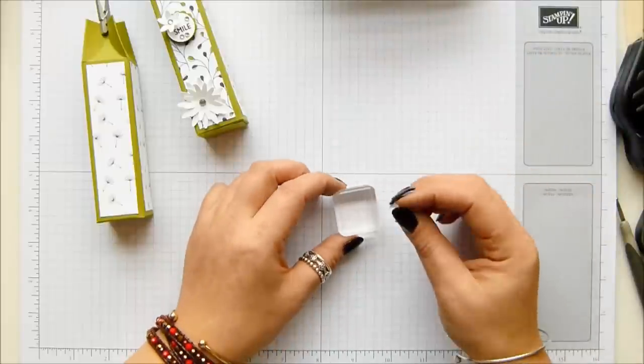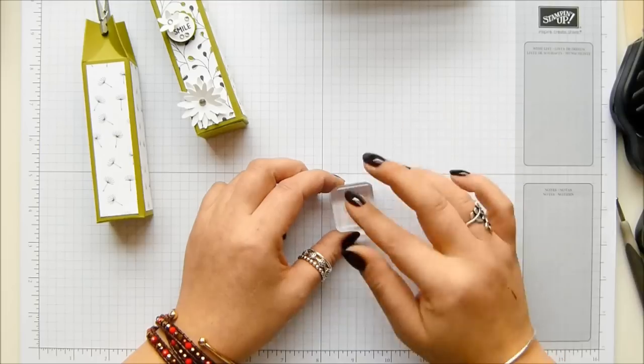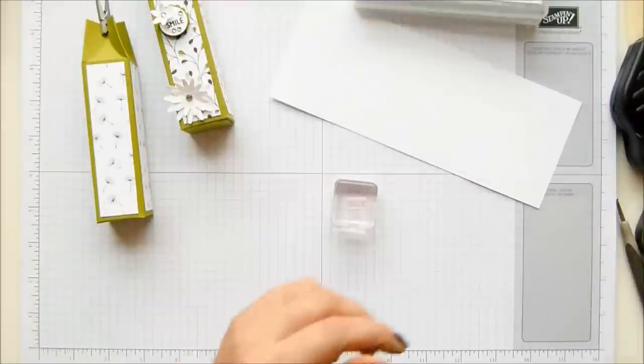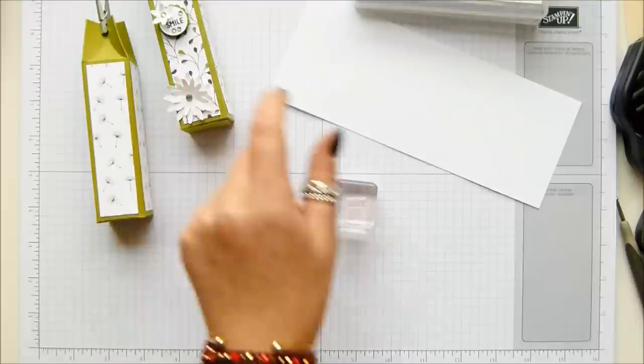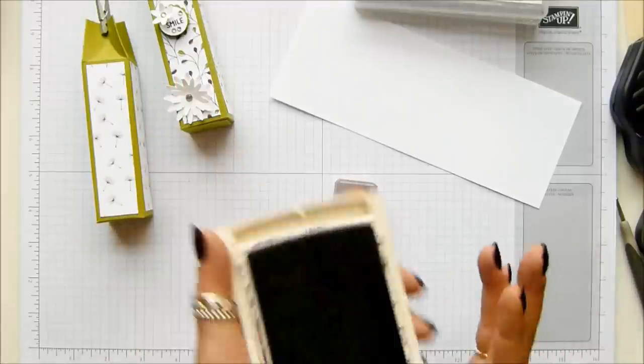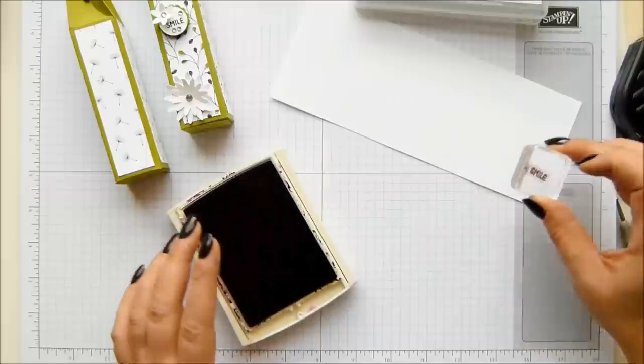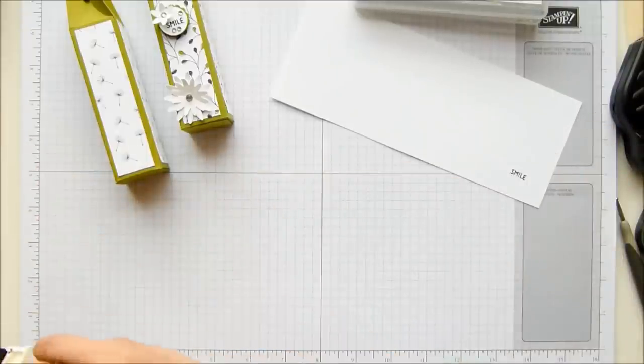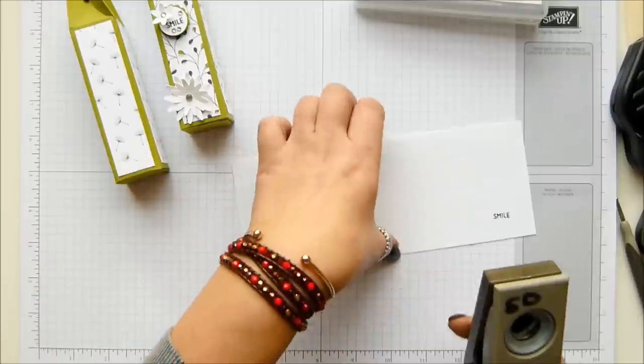It's meant to go with the Project Life stuff, but I'm going to use everything for anything kind of girl. I've got my bit of Whisper White. I forgot to get my ink out. I don't even know which color I'm going to choose. I think I might go Blackberry Bliss, which is the one that I did on there.